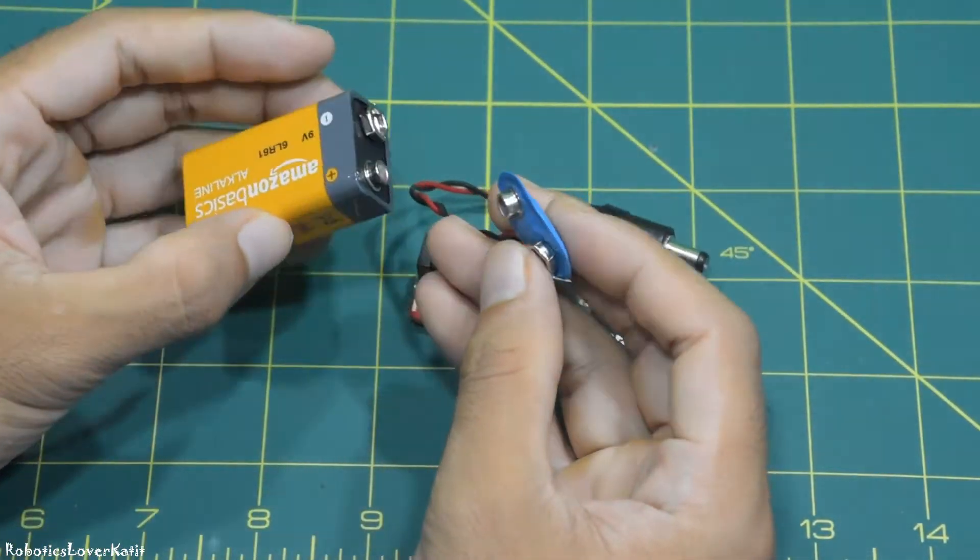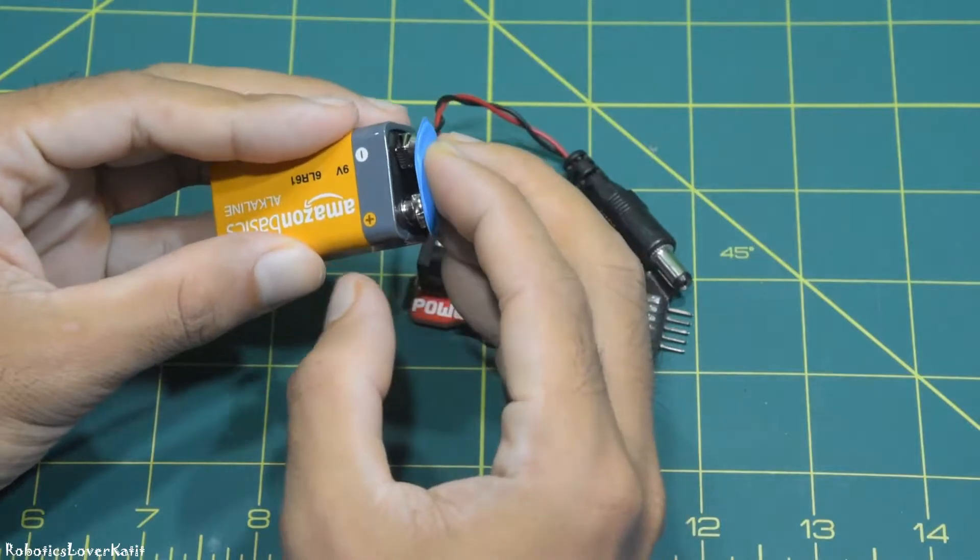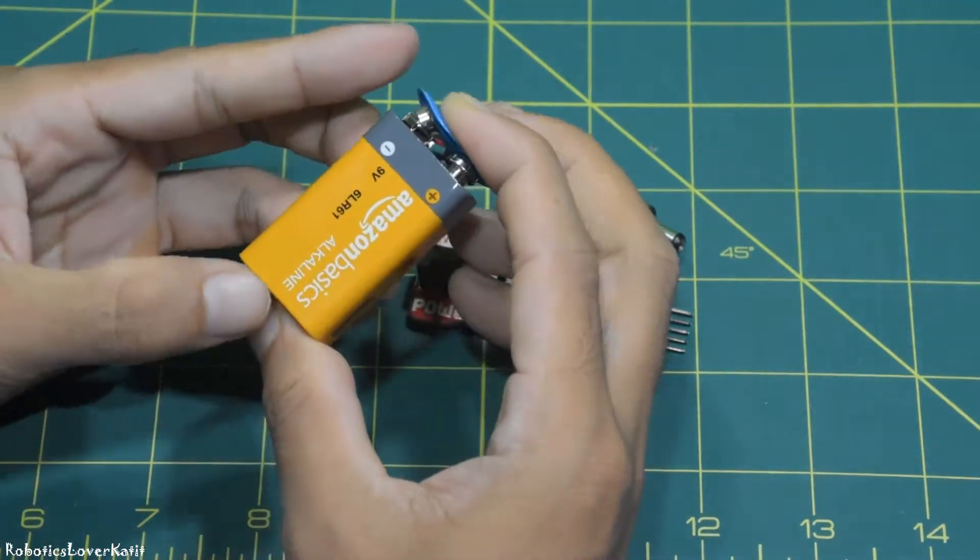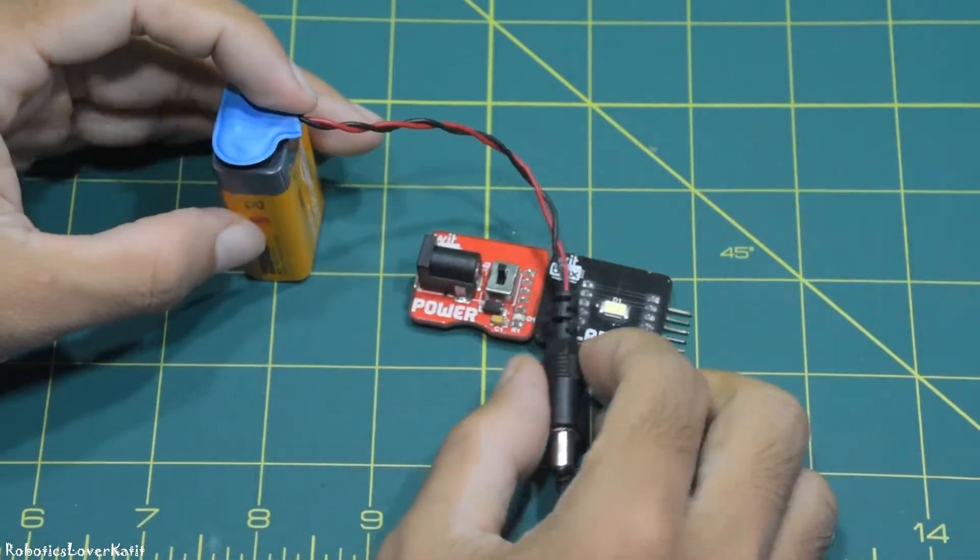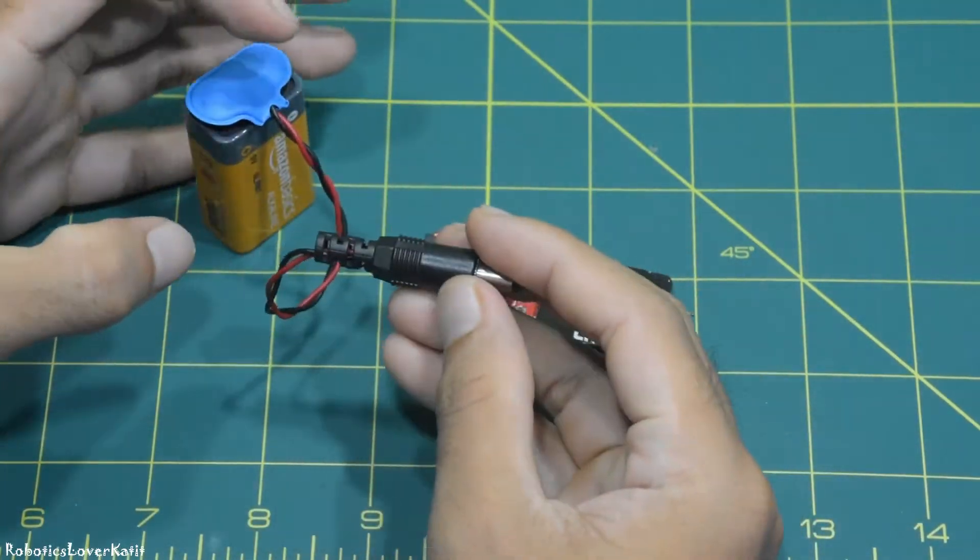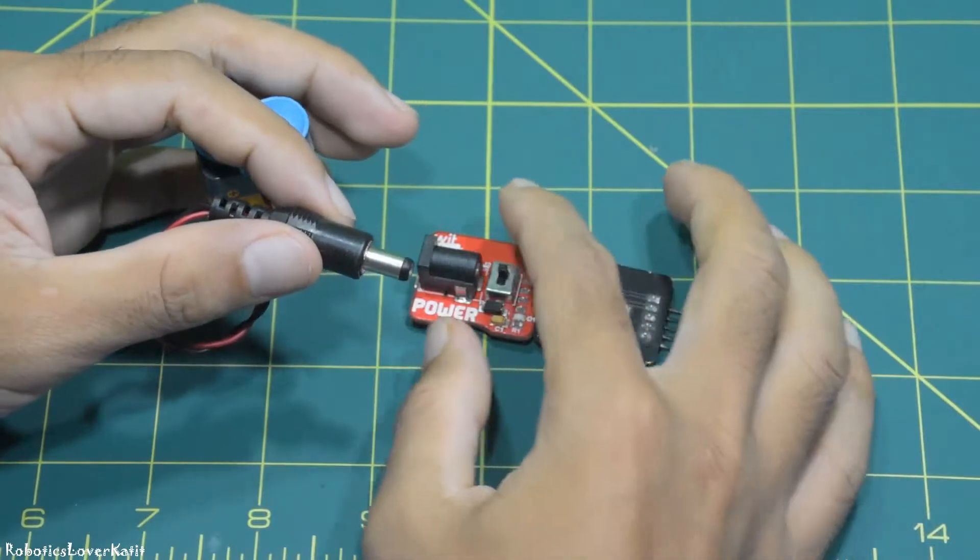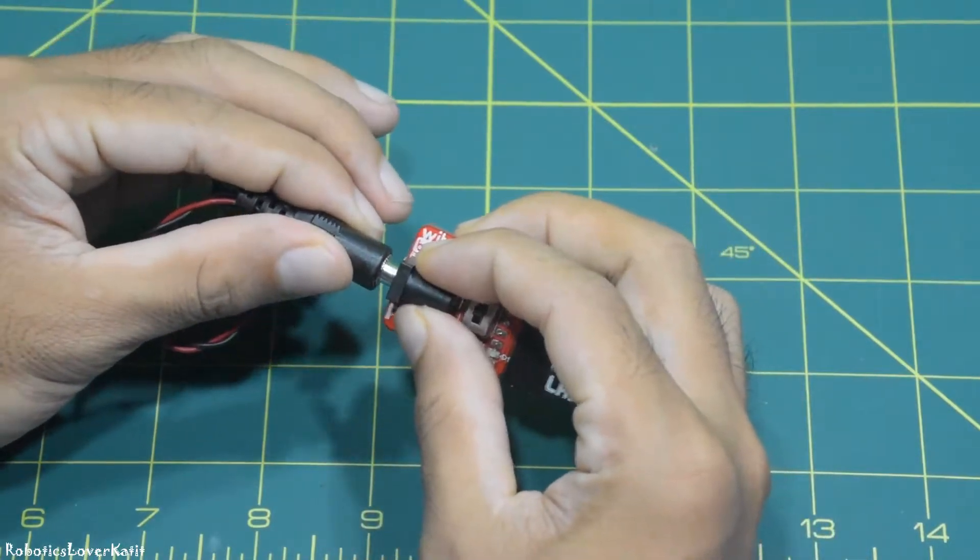Next, connect the 9 volt battery with the 9 volt battery snap cap, and insert the MELDC connector into the power blocks.